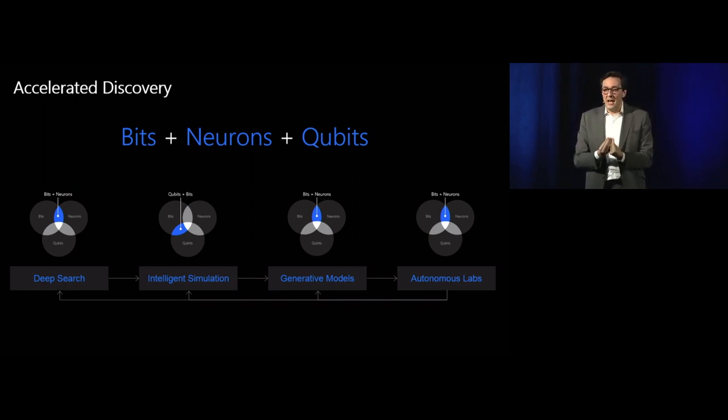Imagine what's going to happen when those three distinct methodologies converge together to have a new workflow of going from deep search using all the previous literature, to do intelligent simulation assisted by quantum and AI and classical computing, to use generative models that AI is giving us to have an act of creativity and imagination and autonomous labs. That is the world that is ahead. Thank you.